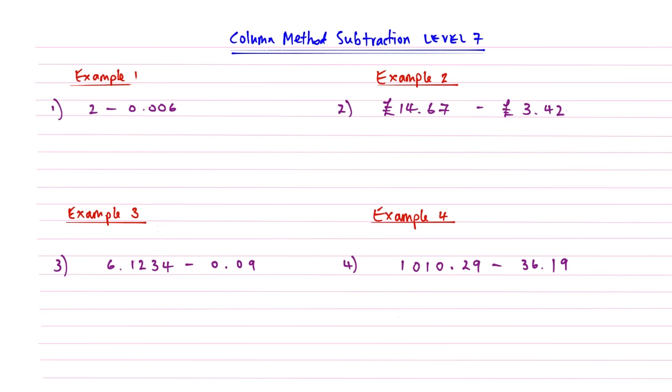In Example 1, we've got 2, which is an integer or whole number, subtract 0.006. Now it's a really common mistake to put the 0.006 first because it's longer. It's a natural instinct for us to do that. But remember, this is a recap from Level 1, the order of the numbers is important when dealing with subtraction, and the first number has to come first. Before we do anything, we need to line these columns up in terms of place value. This is the key when doing any Column Method Subtraction or Addition - you've got to line up your digits in terms of place value.